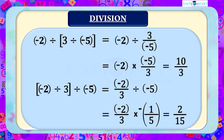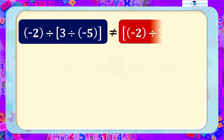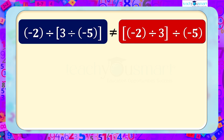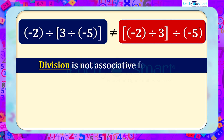Hence, when dividing these numbers by grouping them in two different ways, we can easily see that the results are not equal. That is, division is not associative for integers.